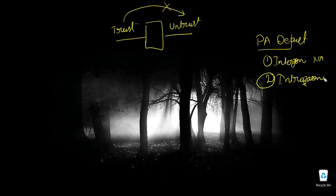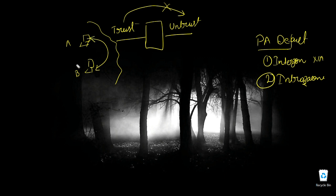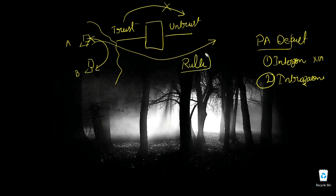The second default is that intra-zone communication is allowed. Intra-zone means within the same zone. For example, if there are two users — User A and User B — on the same internal network zone, they can reach each other without any issue. However, if one of them wants to access the internet or go outside the zone, you must allow it by setting up a security policy rule.